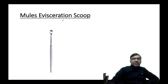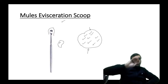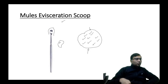In evisceration, the sclera is left intact and all intraocular contents — iris, cornea, aqueous, vitreous, and other structures — are removed using the Mules evisceration scoop. This scoop is larger and has curved edges that allow it to scoop out intraocular contents while preserving the scleral shell.